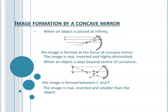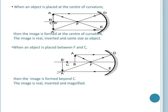Second position: when an object is placed beyond the center of curvature C, the image is formed between the center of curvature and the focus. The nature of the image is real, inverted, and diminished — smaller than the object.